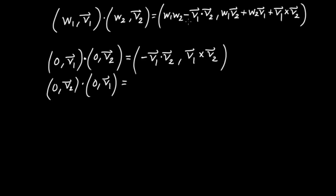And what do I get? Again, the W's are zero, and I'm left with the negative dot product — now it's V2 dot V1. But the dot product is commutative, which means the new scalar part is going to be equal to the previous one: negative V1 dot V2. The dot product is commutative, so I could equally have written negative V2 dot V1.